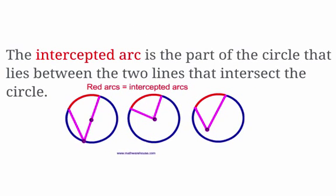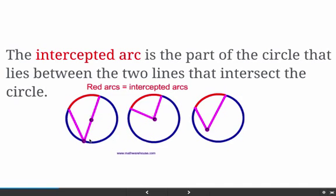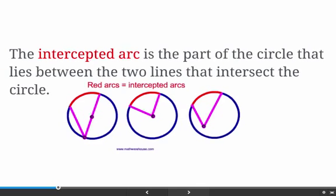An intercepted arc is the part of the circle that lies between the two lines that intersect the circle. Whenever we have an angle — whether it's an inscribed angle, a central angle, or an angle inside the circle — the part that is cut off by the points of the angle is called the intercepted arc.